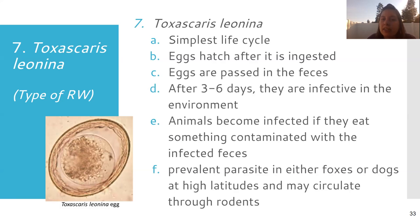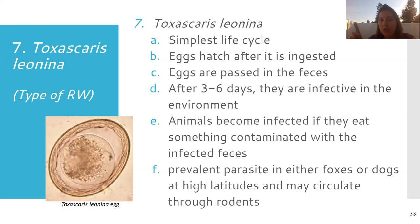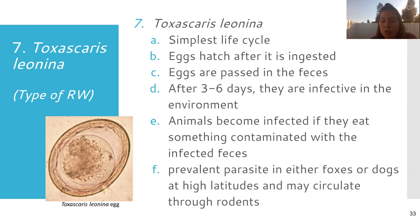The first roundworm is Toxocara leonina. This one is first because it has a pretty simple life cycle — the eggs hatch after being eaten and are also passed in the feces. It takes less than a week for the eggs to hatch into larvae and be ready to infect another animal. You're going to see this a lot in foxes or dogs, but honestly this roundworm is not super picky about who it infects.